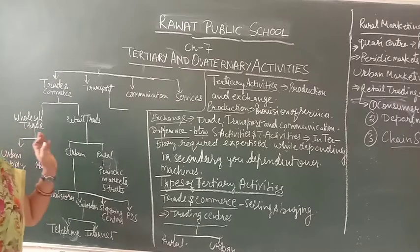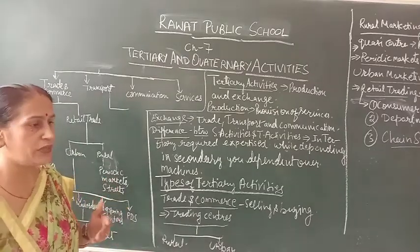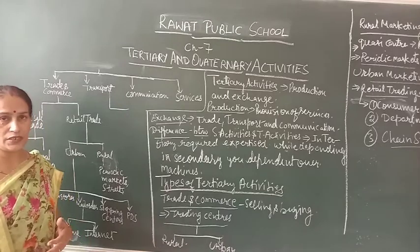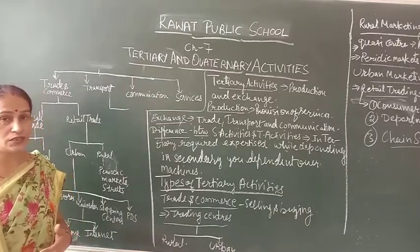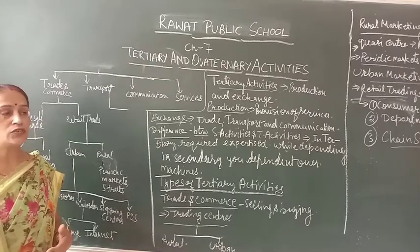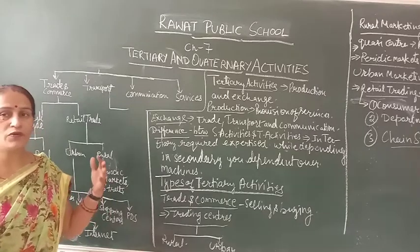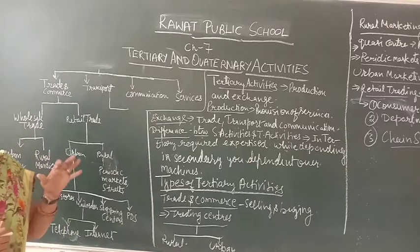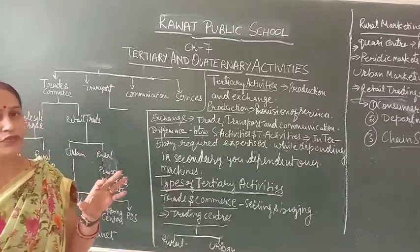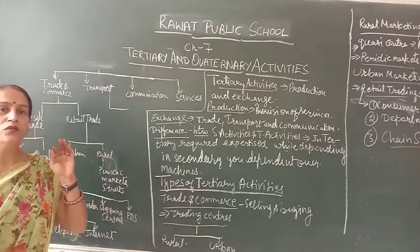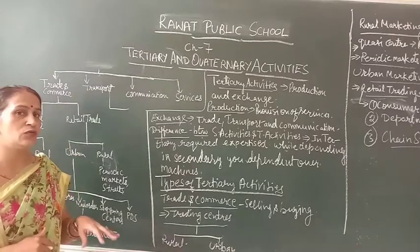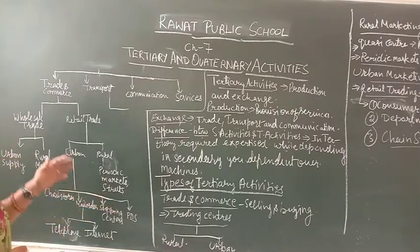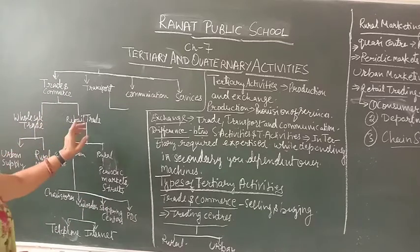Wholesale trade — being students of class 12, we are already aware of how the market system works. Wholesale literally means dealing in large quantities or large amounts of goods stored in one place. So we have a wholesaler who deals in bulk, while a retailer trades per piece. Trade and commerce can thus be divided into wholesale and retail trade.